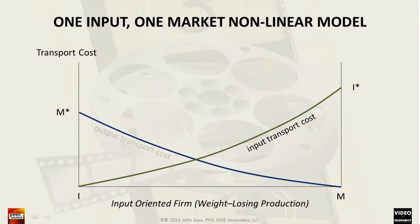Next, we graph an output transport function. This function decreases at a decreasing rate as we leave the winery located at the vineyard and approach the market. We could assume that moving a truck filled with cases of wine bottles into a densely populated area becomes easier because the truck can use high-speed expressways as it gets closer to the city and the wholesale district of the marketplace. If production were to take place at the vineyard, the output transport cost would start at its maximum point of M*.